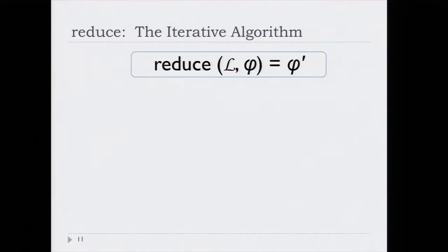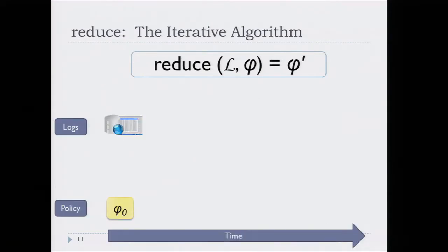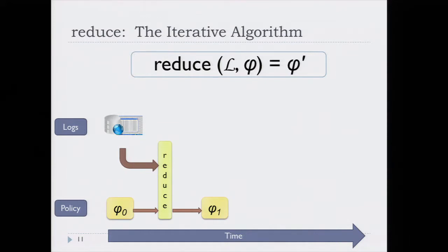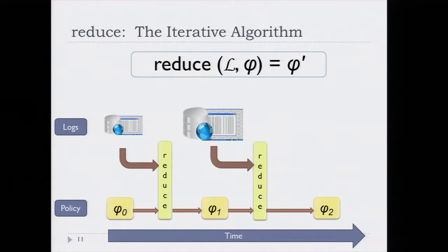The way we deal with incompleteness in logs is to treat logs as three-valued structures, where given a predicate, the system will come back sometimes with true or false, but sometimes with the answer that it's unknown. The audit algorithm takes a log L and a policy phi as input, checks as much of the policy as it possibly can given the information in the log, and then outputs a residual policy phi-prime, which will be checked when the log is augmented with additional information. The audit happens in rounds — every week, month, or day depending on organizational policy.